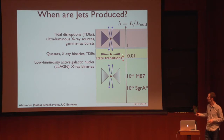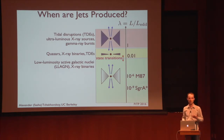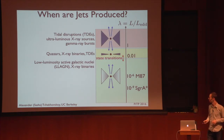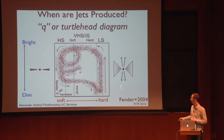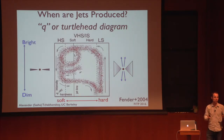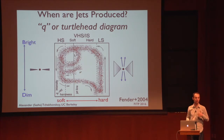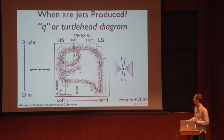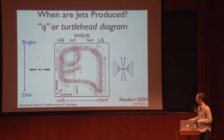There is actually very complicated phenomenology observed in accreting black holes that involves transitions between these two states, called spectral state transitions. I will show you the diagram of how a representative black hole goes between these two states — this is called a hardness-intensity diagram, or Q diagram, because of the Q-shaped structure you see. It is also called a turtle-head diagram.